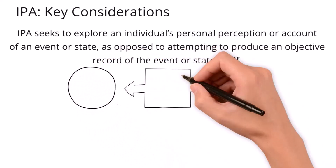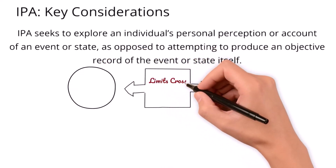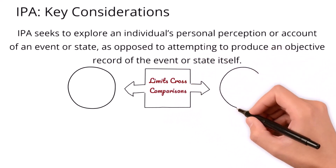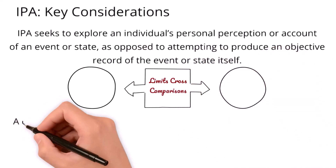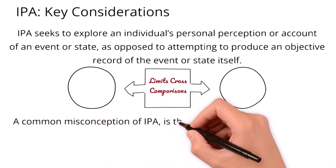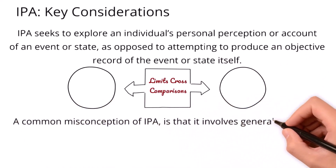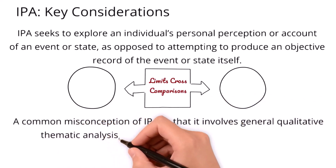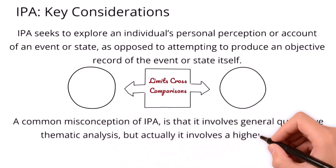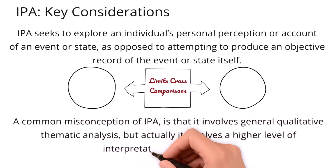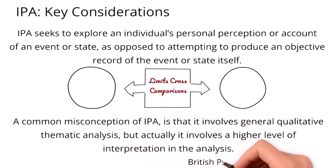IPA seeks to explore an individual's personal perception or account of an event or state, as opposed to attempting to produce an objective record of the event or state itself. This focus and emphasis can limit direct cross-comparisons between the cases of participants. It has been suggested that a common misconception of IPA is that it involves general qualitative thematic analysis, but actually it involves a higher level of interpretation in the analysis. Therefore it's not just a case of following simple qualitative analytical principles, but it needs its own unique set of exploration and interpretation within the dataset.